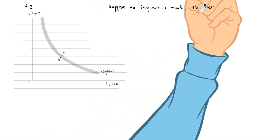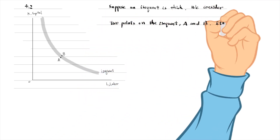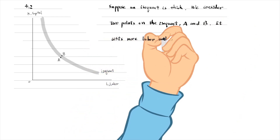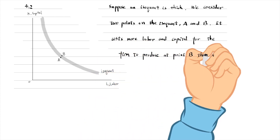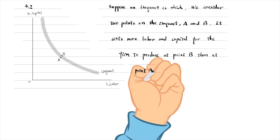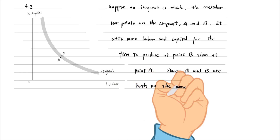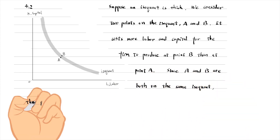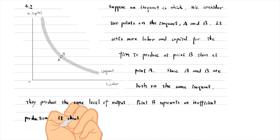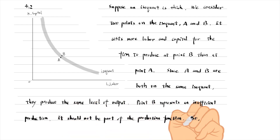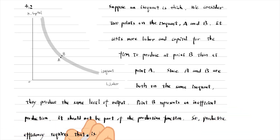We consider two points on the isoquant, A and B. It costs more labour and capital for the firm to produce at point B than at point A. Since A and B are both on the same isoquant, they produce the same level of output. Point B represents an inefficient production — it should not be part of the production function. So, productive efficiency requires that isoquants must be thin.